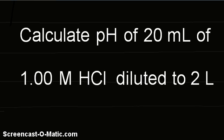Calculate pH of 20 ml of 1 molar HCl diluted to 2 liters.